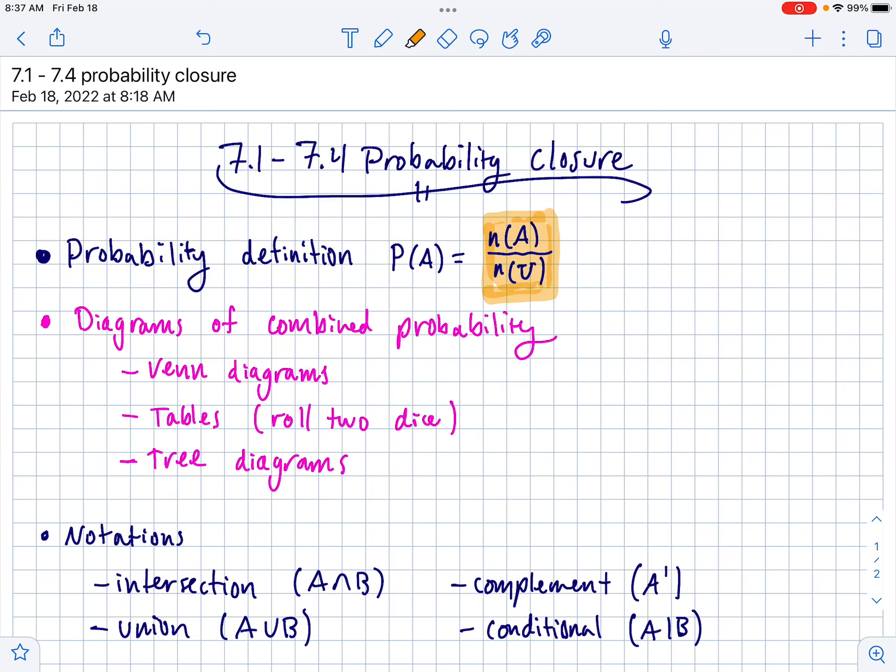There's three different ways we looked at displaying probability sample space problems. We definitely did a fair amount of work with Venn diagrams. Remember that some Venn diagrams are overlapping, sometimes they're disjoint where they're not touching, and sometimes there's one that lives inside another. So there's lots of different ways to draw Venn diagrams.